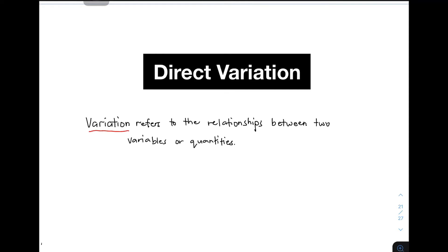Variation refers to the relationships between two variables or two quantities. Within this series of topics, we will discuss four different types of variation. And the first one is direct variation. So without further ado, let's do this topic.